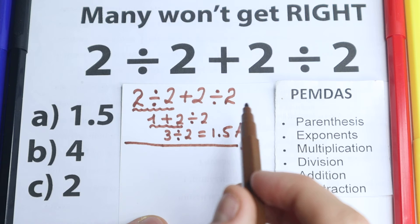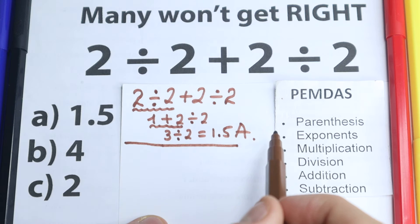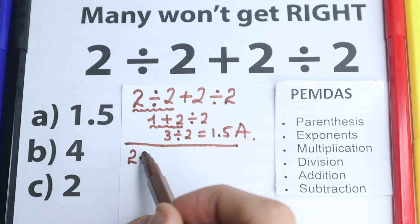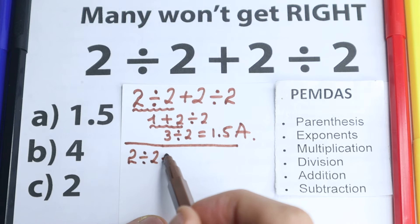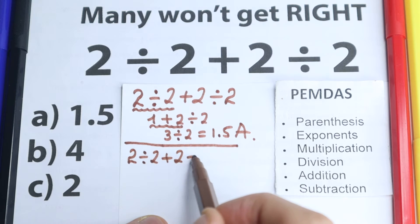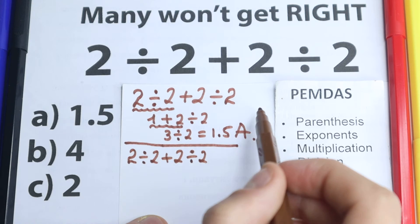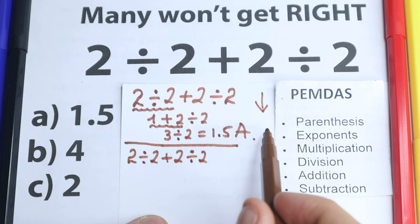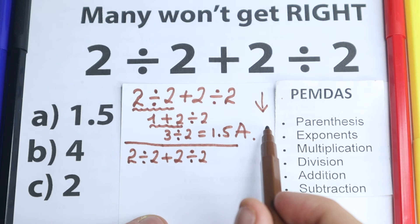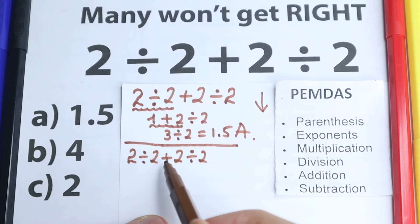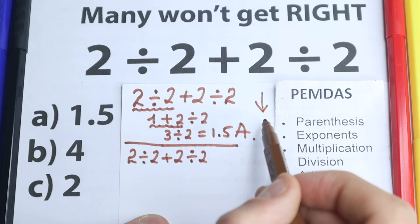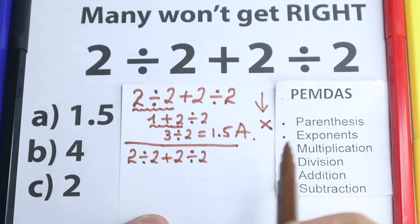So I want to separate these two solutions without telling which is correct or incorrect yet. Let's start to solve it with PMDMC. We have 2 divided by 2 plus 2 divided by 2. PMDMC works from the top to the bottom. The first step is parentheses — let's scan where we have parentheses right here. I don't see any parentheses, so we just skip this part, which is really great.